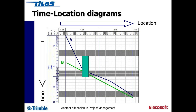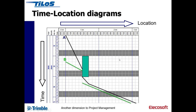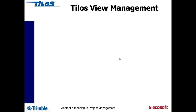You also have physical obstructions — things like bird nesting season at a particular location, or a field not being released to the road route for legal reasons until later on. You have to find a way around that, and there are elegant solutions in TILOS that are more difficult to find in traditional software. That's the benefit of time-location, time-chainage diagrams — they're all the same terminology.